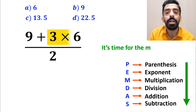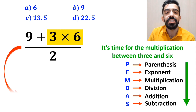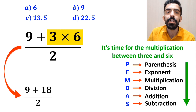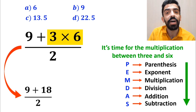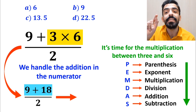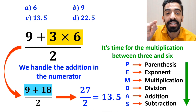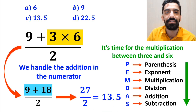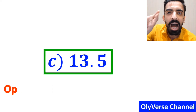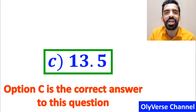The next step is the multiplication between 3 and 6, which simplifies the expression to 9 plus 18 over 2. Finally, we handle the addition in the numerator, simplifying to 27 over 2, which gives us the answer 13.5. Option C is the correct answer to this question.